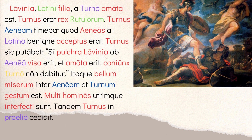'Lavinia, Latini filia, a Turno amata est' — Lavinia, the daughter of Latinus, was loved by Turnus. Amata est is perfect tense passive voice; amata is feminine singular referring to Lavinia. Turnus is a famous character in the Aeneid — he will be Aeneas's enemy. 'Turnus erat rex Rutulorum' — Turnus was the king of the Rutulians. 'Turnus Aeneam timebat quod Aeneas a Latino benigne acceptus erat' — pluperfect passive: Aeneas had been welcomed by Latinus, and then Turnus feared him.